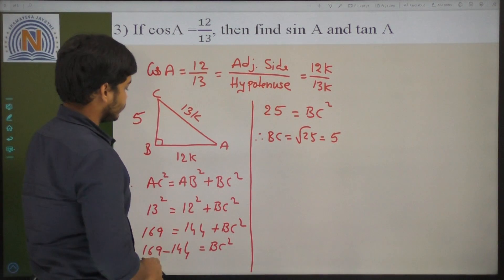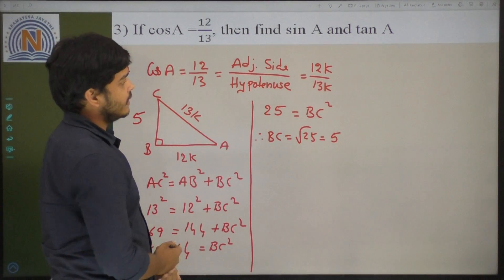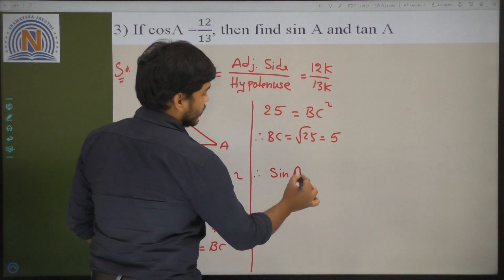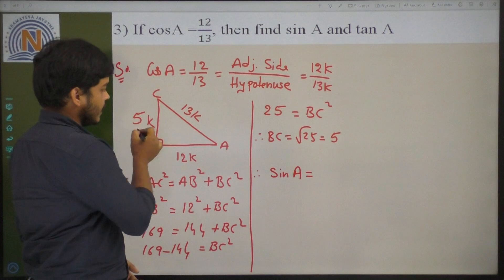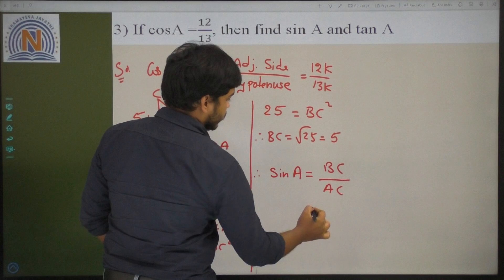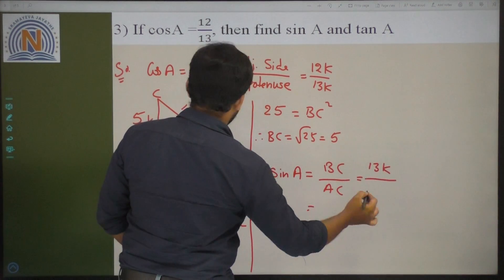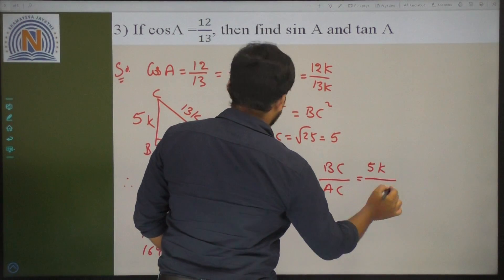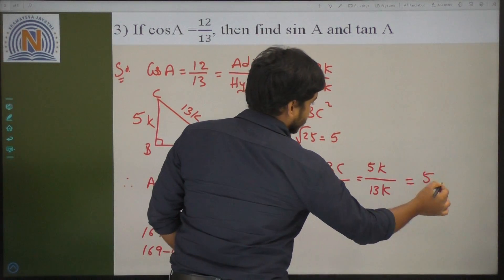We need to calculate sin A and tan A. Sin A value is opposite by hypotenuse, that is BC by AC. BC is 5K and AC is 13K — K and K cancel — then sin A equals 5 by 13.